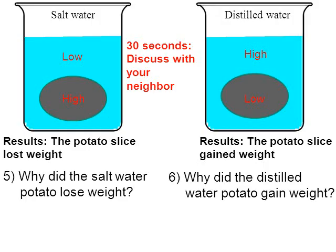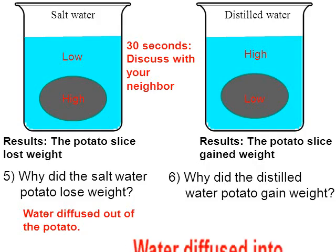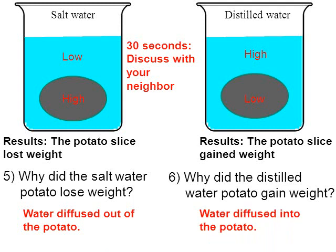Why did the saltwater potato lose weight? Try to avoid vague answers like 'it got dehydrated' — that's true, but be more thorough. Water diffused out of the potato: water moved from a high concentration inside the potato to a low concentration outside. For the distilled water potato, avoid just saying 'it absorbed water' — explain why. It absorbed water because there was a high concentration of water outside the potato and a low concentration inside, so water diffused into the potato.